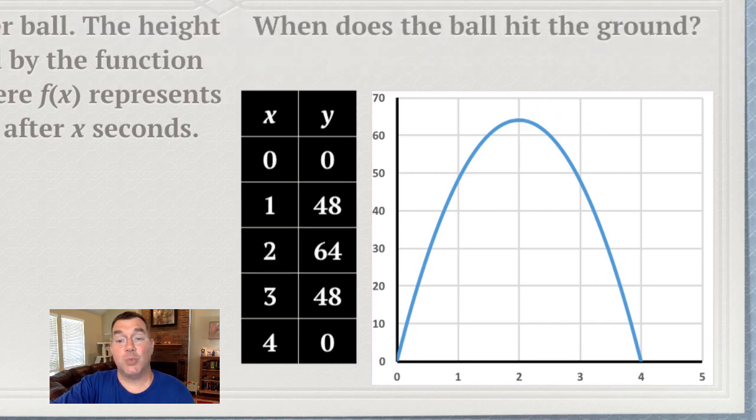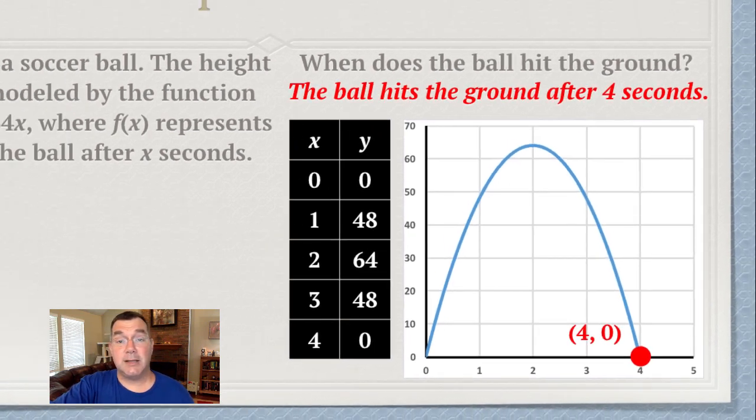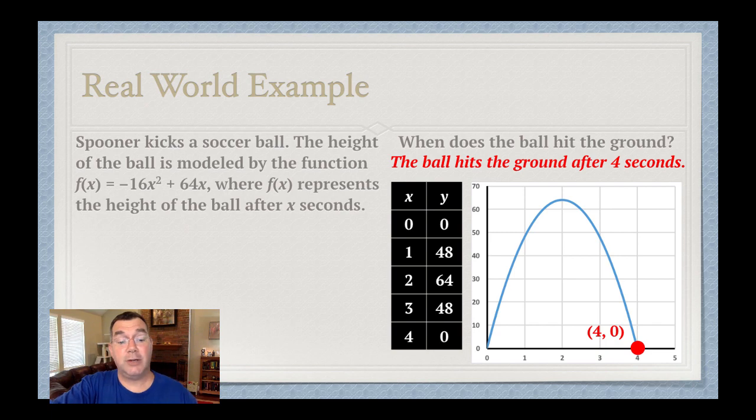And then the last part of the question is when does the ball hit the ground? Well, that means I'm looking for when the height is zero, and that's going to be at x equals four, so the ball is going to hit the ground after four seconds, four seconds after he kicks the ball. All right, so that is the basics of graphing quadratic functions. If you have any questions, please let me know, and I will see you tomorrow.